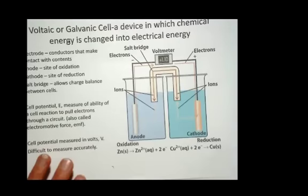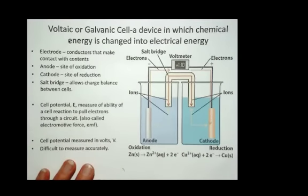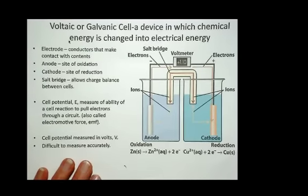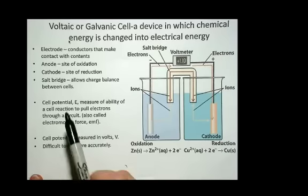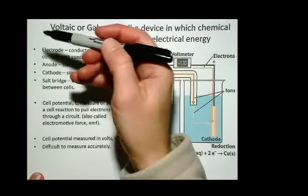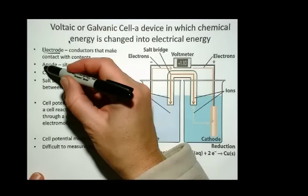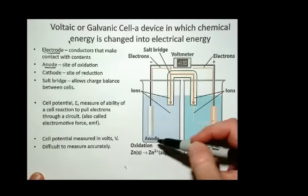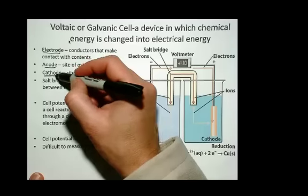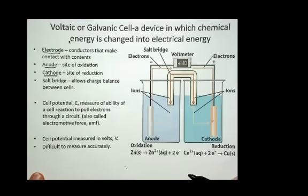Here is just a summary slide of all the parts of the cell that you should be aware of after going through the activity. Here's the terms you should be aware of: the electrode, those are the conductors that make contact with the contents; the anode is the site of oxidation; and the cathode is the site of reduction.